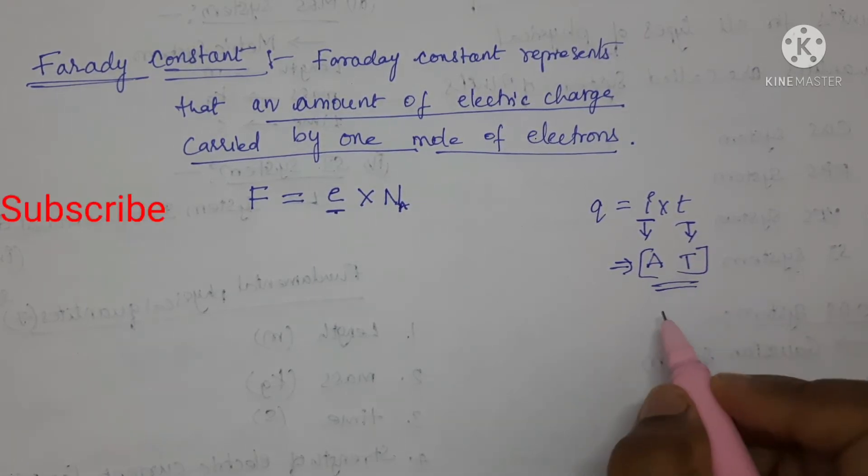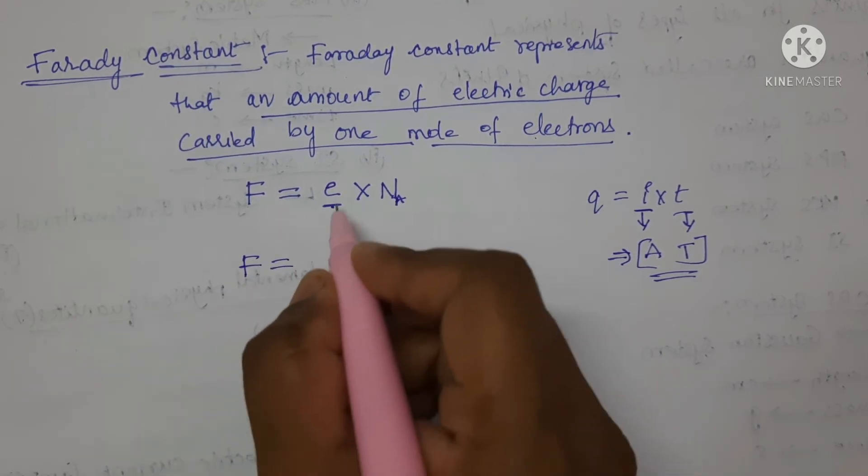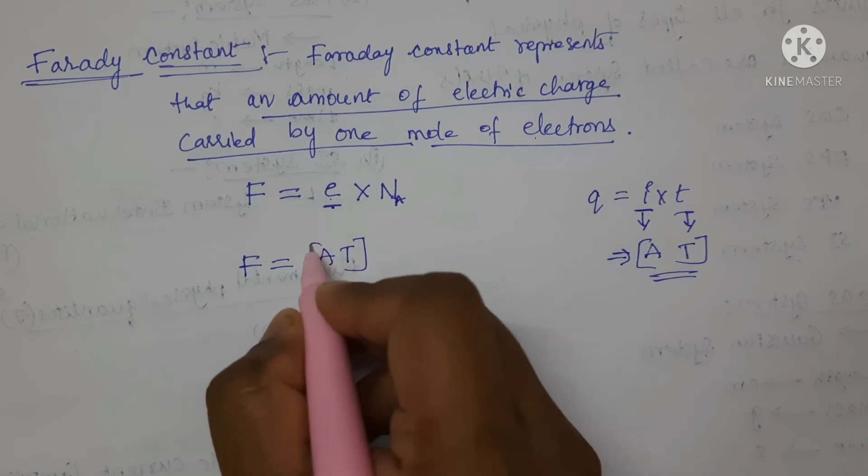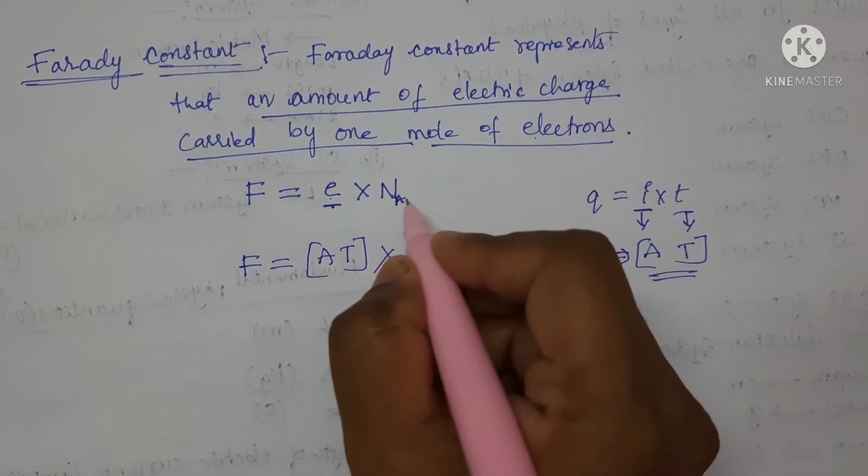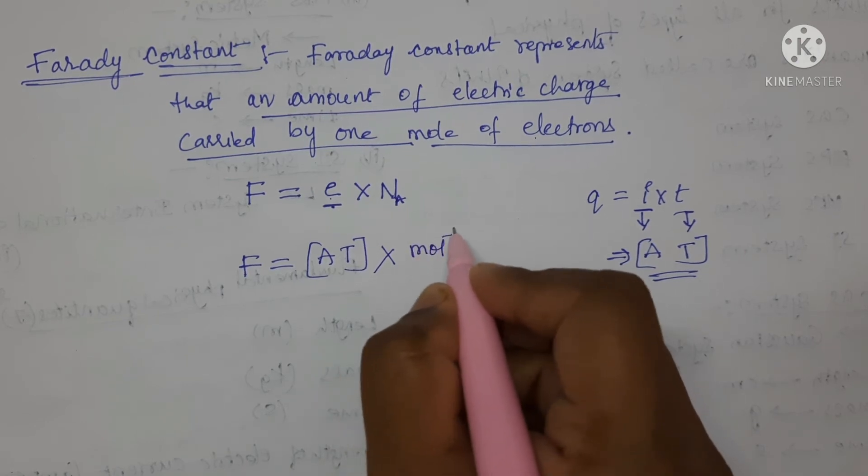This is the dimensional formula for charge. Let us substitute here. F is equal to, for charge we got A T as the dimensional formula, and the dimensions of Avogadro's number is mole inverse 1.